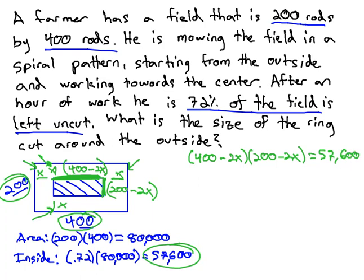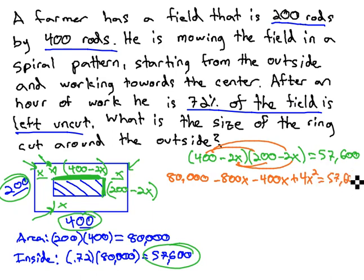We now have an equation we can solve. Start by foiling out this guy, gives us 80,000 minus 800x minus 400x plus 4x squared equals the 57,600.